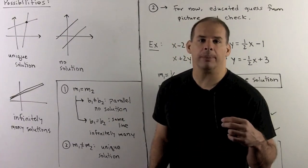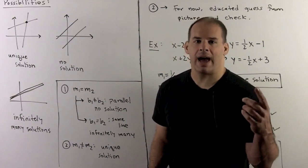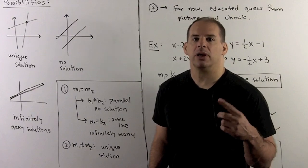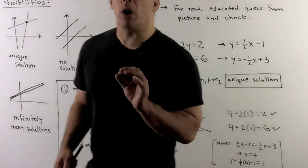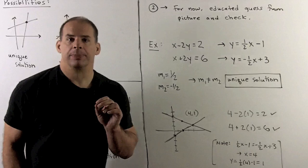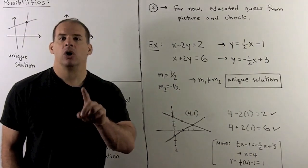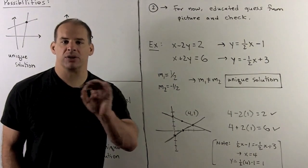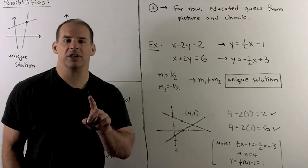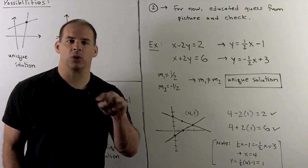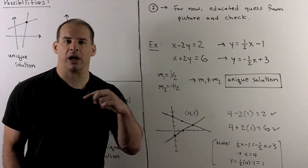When we have a unique solution, how do we find it? For this we use the graphing method: take both lines, graph them to the best of your ability, take a guess at the point of intersection, and then check your work. If it doesn't work out, draw a better picture.